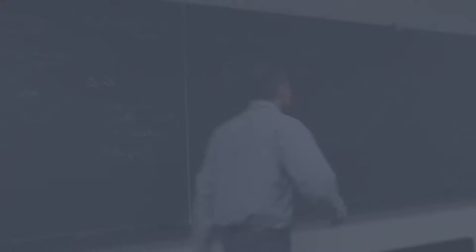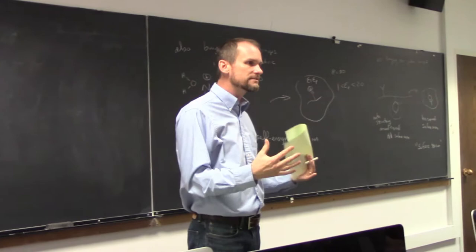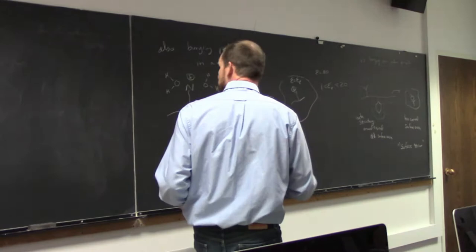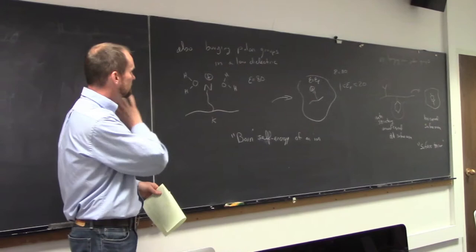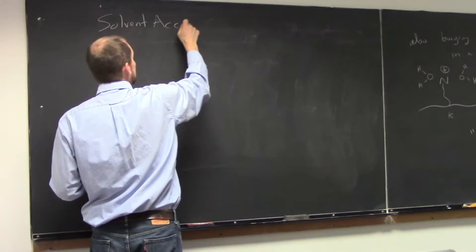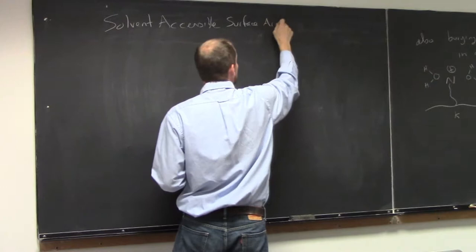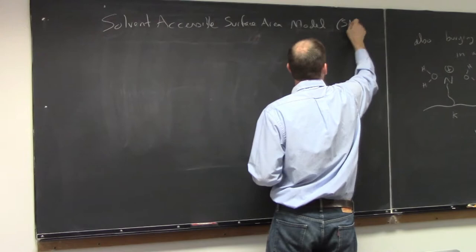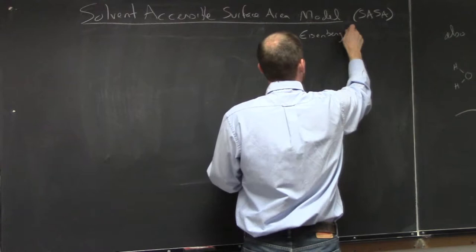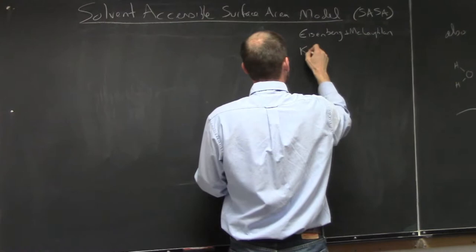Part of why solvation is hard to quantify is because you're looking at different physical pieces - the entropic piece has to be averaged over whole statistical ensembles of different configurations of the solvent molecules. So we have a few models that incorporate different parts of these contributions. One of the easiest is the solvent accessible surface area model, also called SASA - from Eisenberg and McLachlan and Connolly and Delarue, going back to 1994 and 1986.